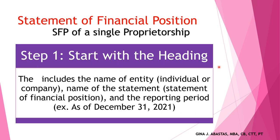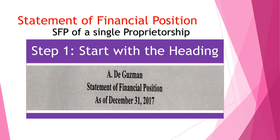Step one: start with the heading. The heading includes the name of the entity (individual or company), the name of the statement — Statement of Financial Position — and the reporting period, for example December 31, 2021. Some complex forms of business may include a more detailed heading, such as when reporting a consolidated balance sheet or presenting comparative years. The next slide shows an example of a simple heading stated in local currency, with the name of the individual, the title, and the date.